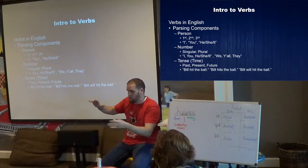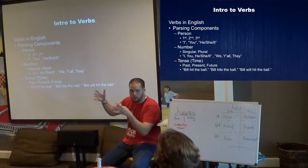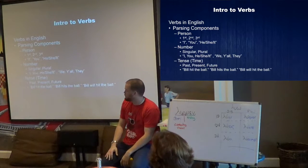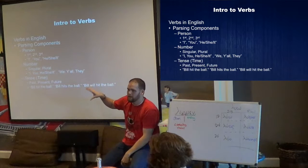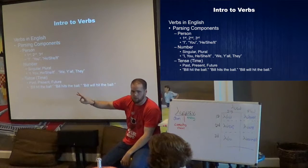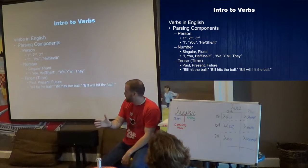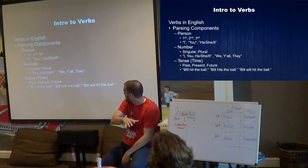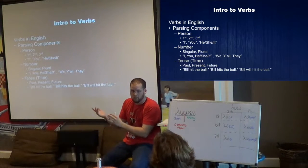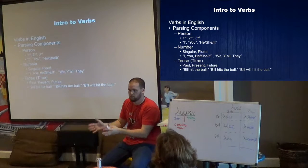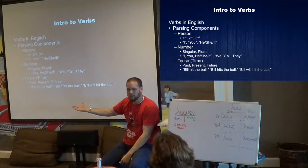Number — just like with nouns: singular or plural. I, you, he, she, it would all be singular; we, y'all, they would be plural for verbs. And then tense — in English this is going to be the one that gets funky when we get to Greek. Tense in English is past, present, and future. The way we communicate those is by adding different words. Example sentence: 'Bill hit the ball' — that's past tense. Present tense: 'Bill hits the ball' or 'Bill is hitting the ball.' Future tense: we add the word will — 'Bill will hit the ball.'